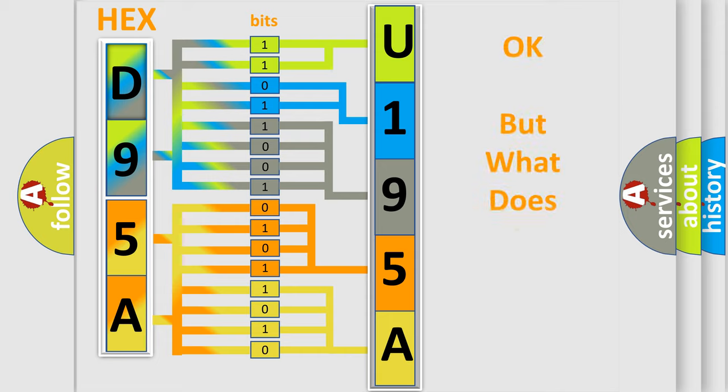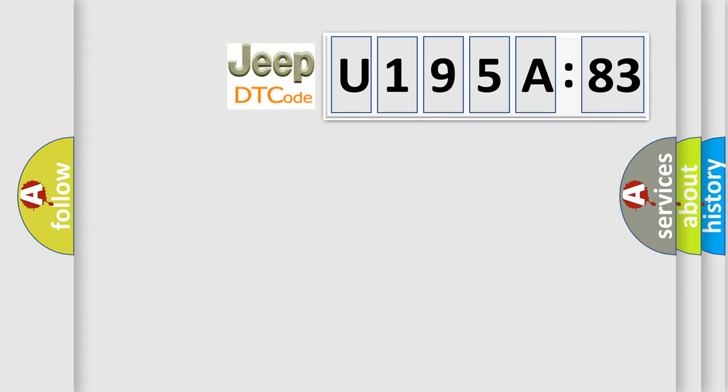The number itself does not make sense to us if we cannot assign information about what it actually expresses. So, what does the Diagnostic Trouble Code U195A83 interpret specifically for Jeep car manufacturers?